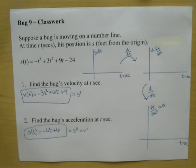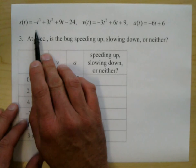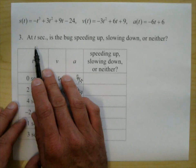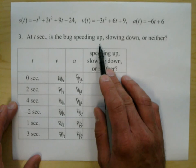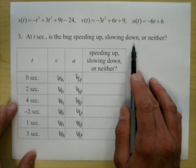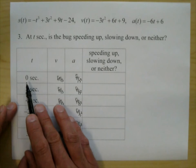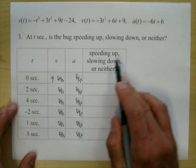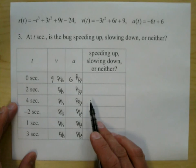Now let's do the next problem where we fill in a table. Problem number three has the position function, velocity function, and acceleration function, which we found in the last two problems. At various times t seconds, we need to determine if the bug is speeding up, slowing down, or neither. Let's fill in the table. Putting t=0 into the velocity gives 9 feet per second. Putting t=0 into the acceleration gives 6.